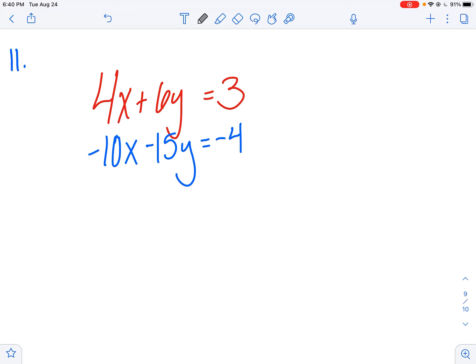So what I want is I want opposites. I want something like maybe 2x and negative 2x. Those will eliminate each other. Or maybe I want negative 15 and positive 15.